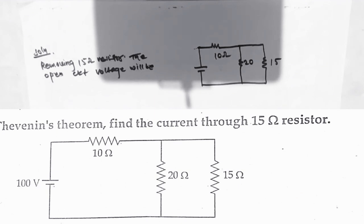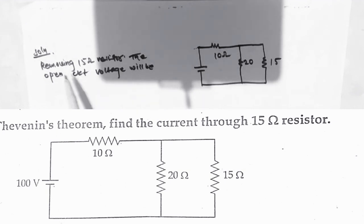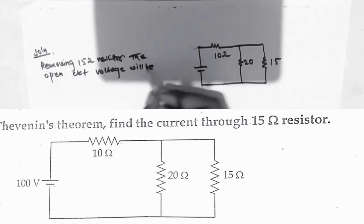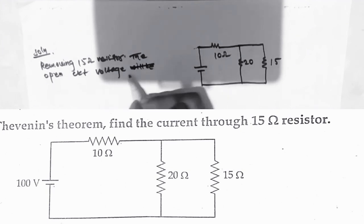In this screen you can see the question: we have to calculate the current through this 15 ohm resistor using Thevenin's theorem. First, we will remove the 15 ohm resistor and calculate the open circuit voltage.